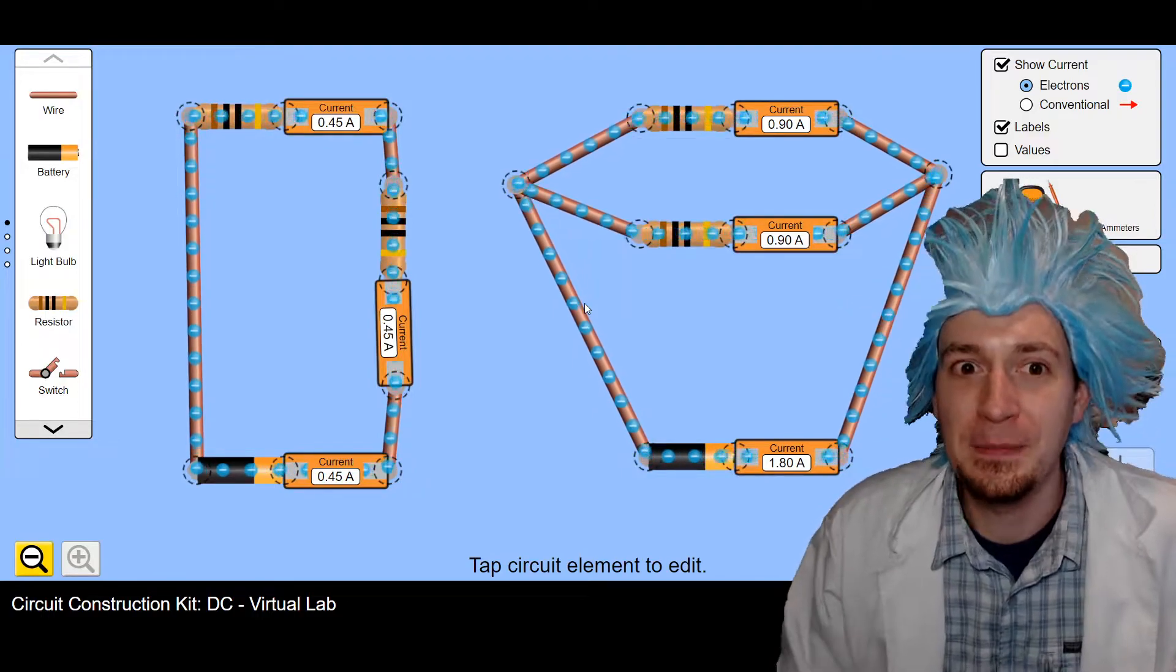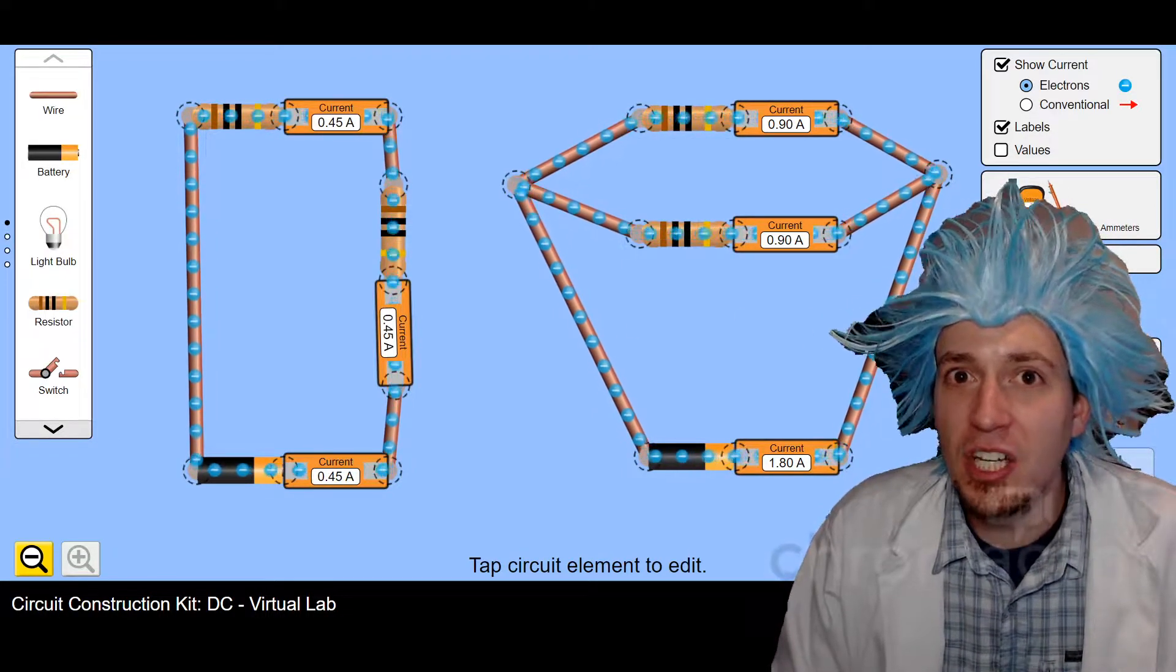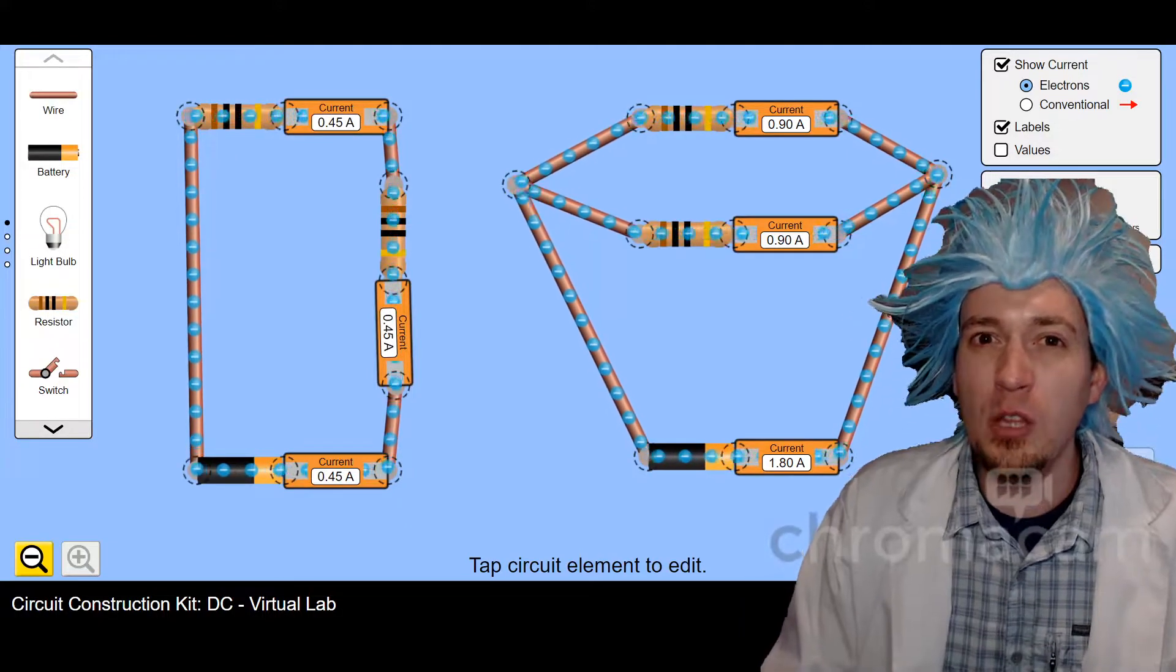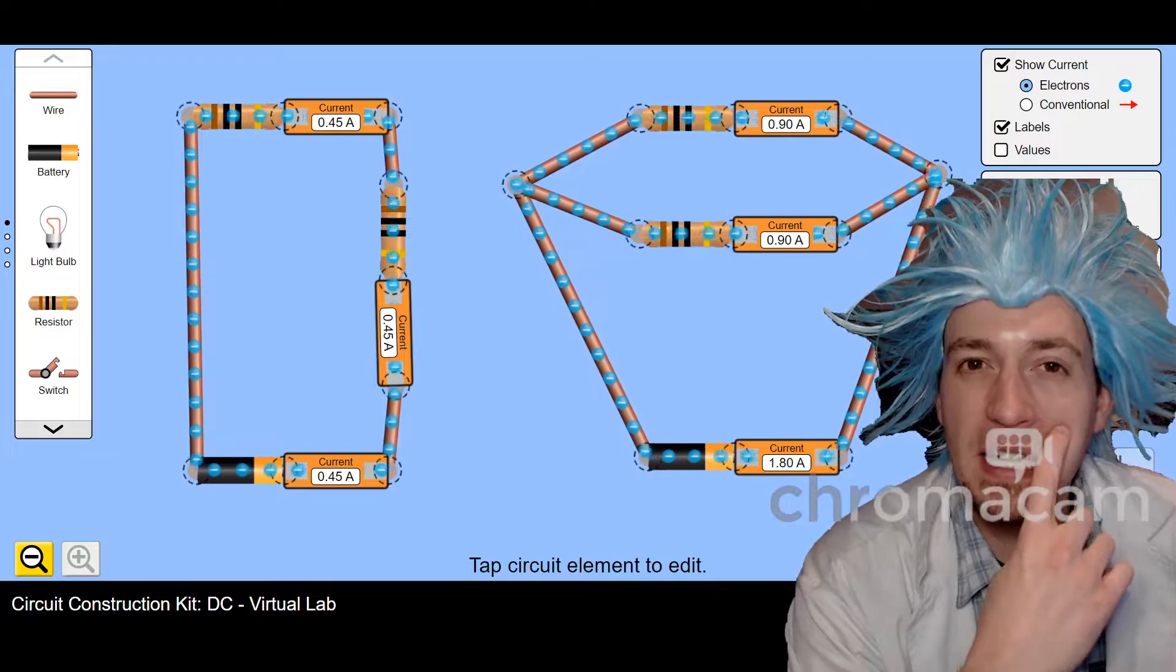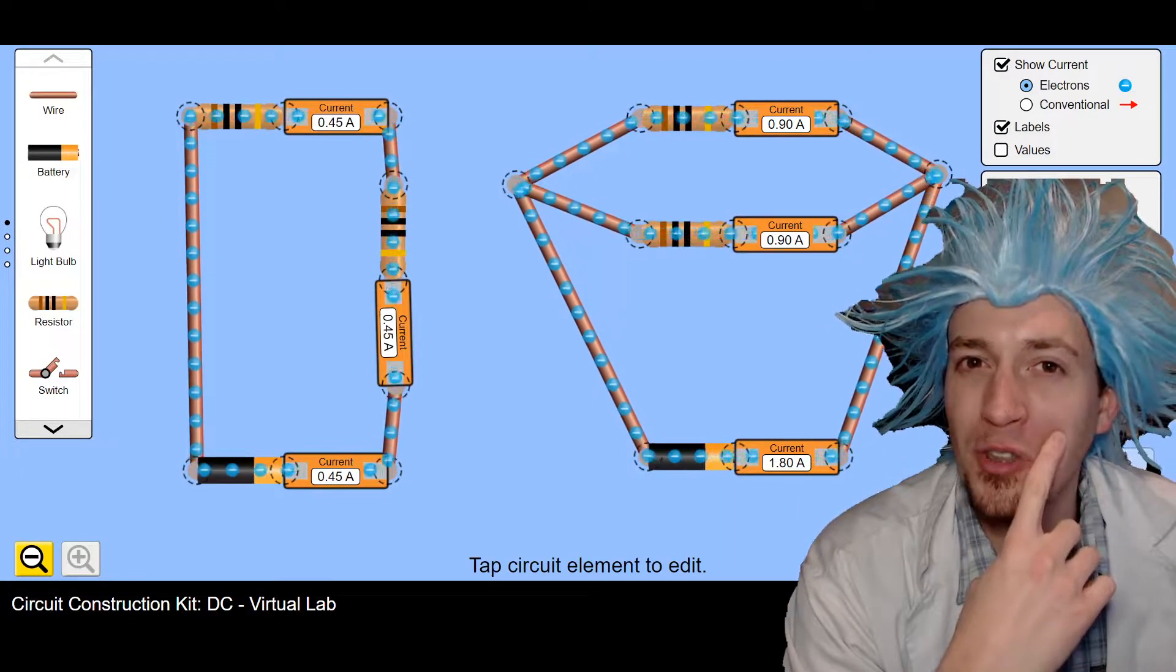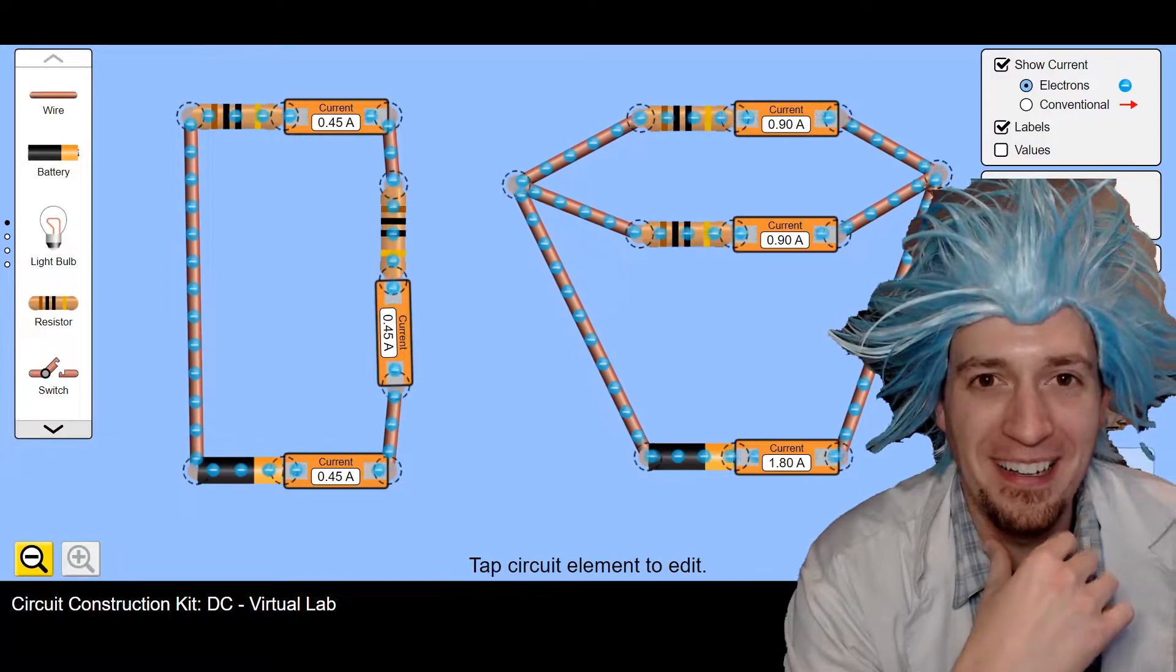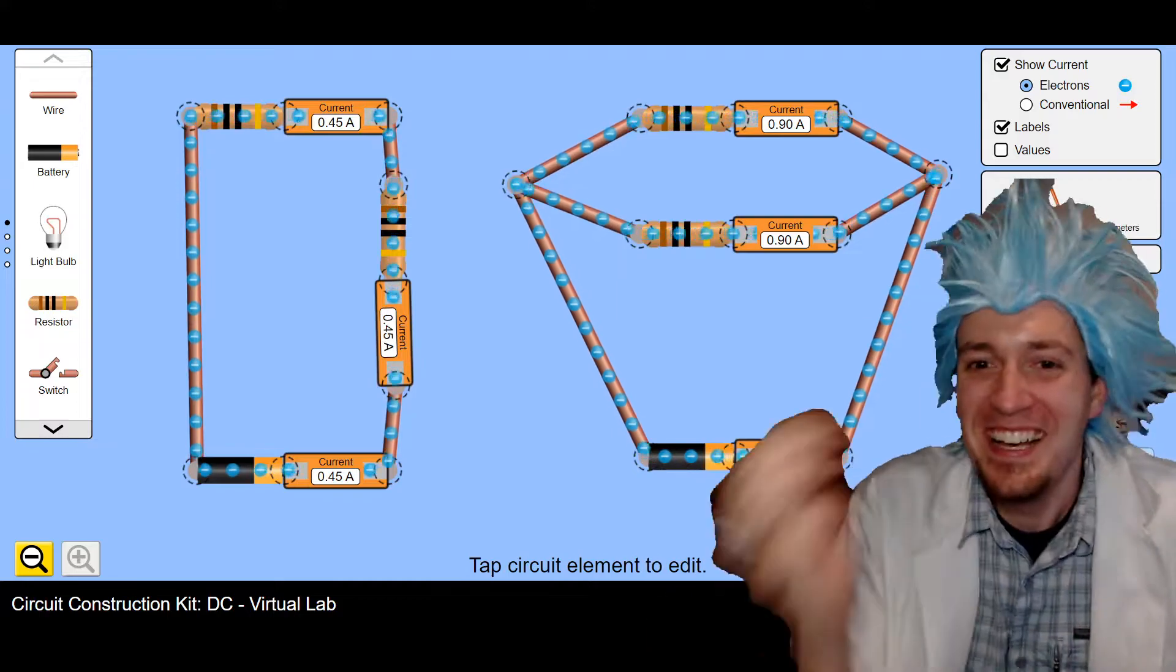First let's talk about current. If we look here, we can see that the current is reading the same in all of these ammeters in series. It's almost like, in series, all the electrons go through everything, so the current must be the same everywhere. It's almost like that, because that's what it is! Amazing!